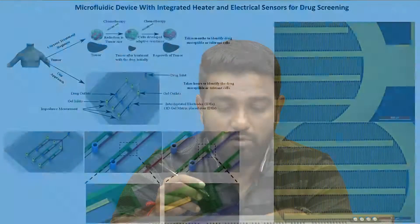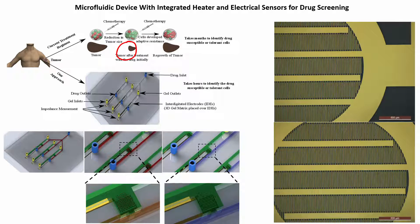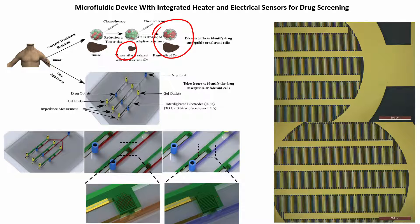Can we design a chip that can screen drugs for a given patient? Suppose you take the example of a disease where you can take the cells of the patient. Right now, cells are taken and grown to form a tumor, then chemotherapy is applied. If the chemotherapy is effective, the tumor cells initially reduce, but after some time the tumor can regrow. So it is very important to identify which drugs a particular tumor is susceptible or tolerant to.